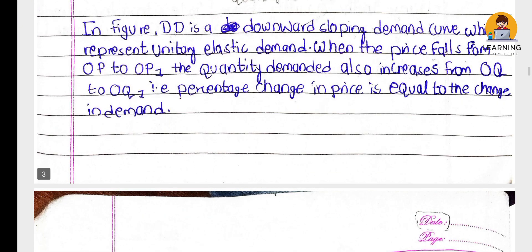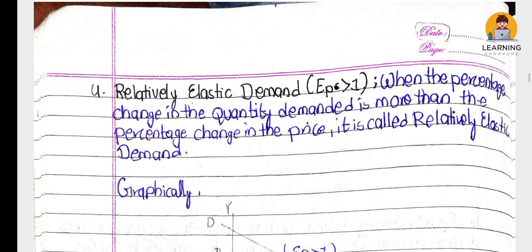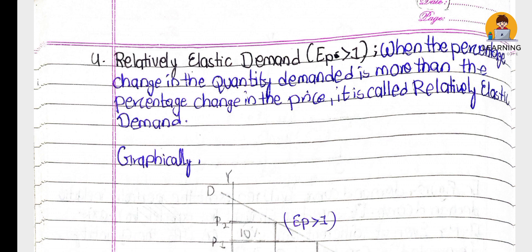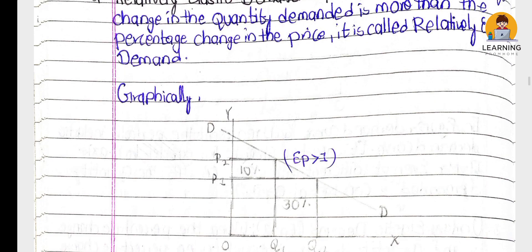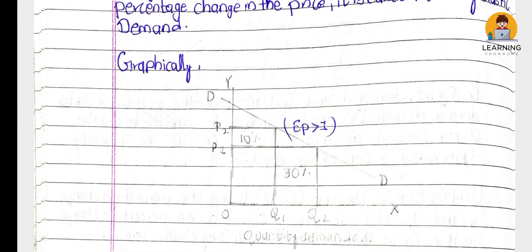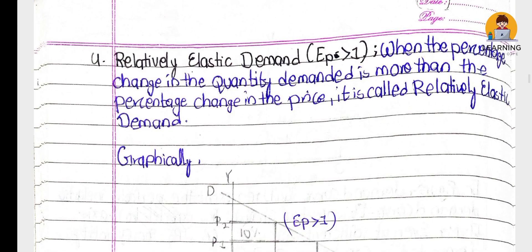Another type is relatively elastic demand. When the percentage change in quantity demanded is more than the percentage change in price, it is called relatively elastic demand. For example, if quantity demanded changes by 20% and price changes by only 10%, then the demand change is more than the price change - so it is relatively elastic demand.